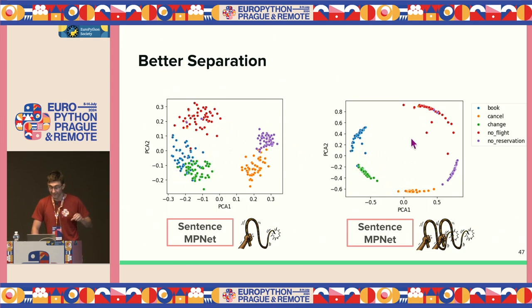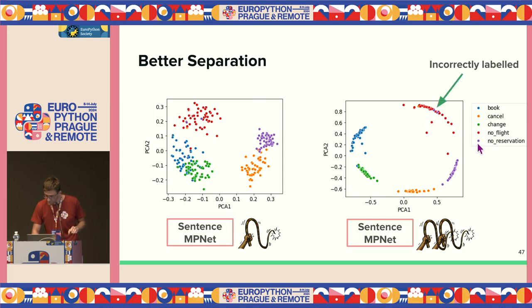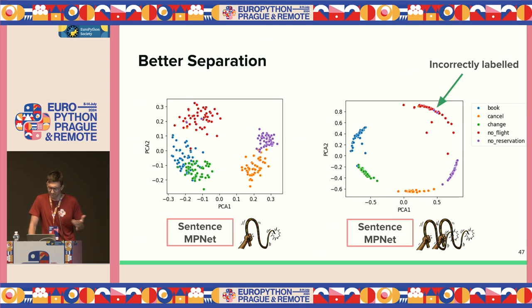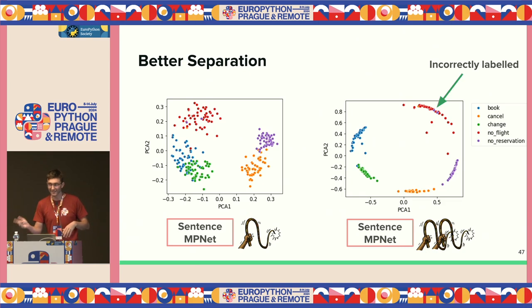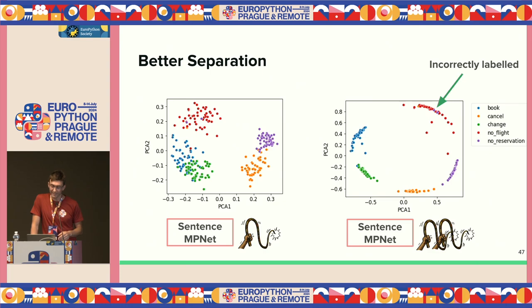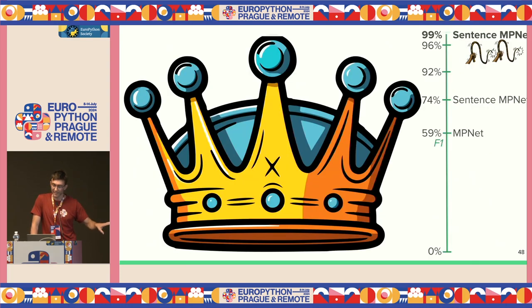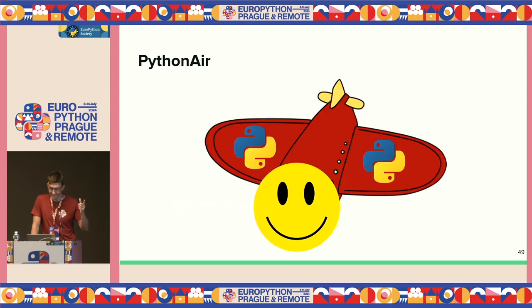This is generally good practice — look at your data, view your data. If you remove these incorrectly labeled data just from the validation set (you can keep them in training), your F1 score would rise to 99%, which would make Python Air very happy.